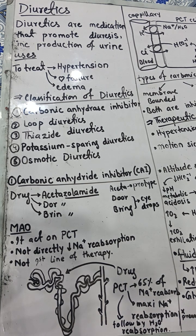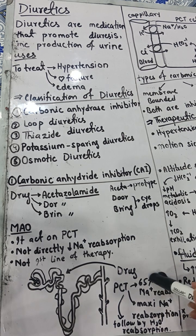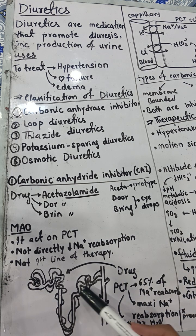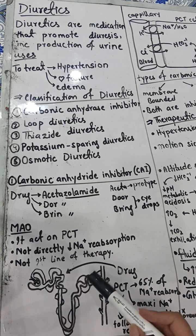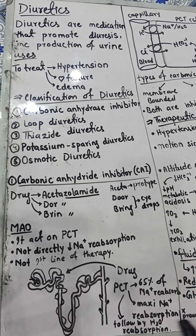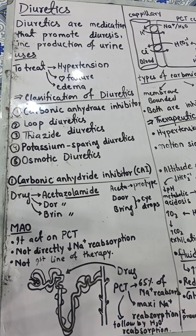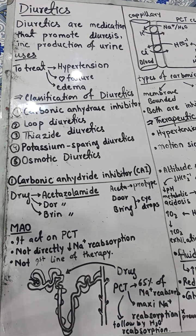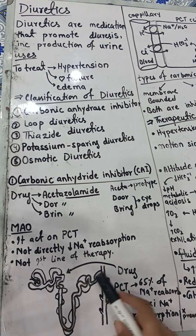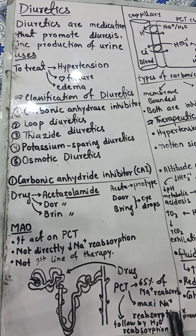The most abundant pump in your body is the sodium-potassium pump, which regulates sodium concentration inside and outside cells. Maximum 65% of sodium is reabsorbed in the PCT, while 25% is reabsorbed through the ascending loop of Henle, and 5% through the distal convoluted tubule. The total sodium reabsorption adds up to 100%.